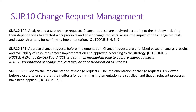BP6 talks about reviewing the implementation of change requests. The implementation of a change request is reviewed before closure to ensure that the criteria for confirming implementation are satisfied and that all relevant processes have been applied. When you document the change request, you also need to document the acceptance criteria. Once the assignee or team says the change request has been implemented, we need to verify whether the acceptance criteria and confirmation criteria have been satisfied before closing.